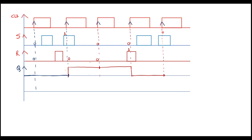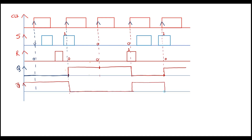At the next positive edge, S is 1 and R is 0, so the flip-flop will set again — it will go high and remain high. This is how the positive edge-triggered flip-flop works. The Q-bar output is the complement of Q. Where Q is 0, Q-bar is 1, and where Q is 1, Q-bar is 0. This is the complete waveform for the positive edge-triggered SR flip-flop.